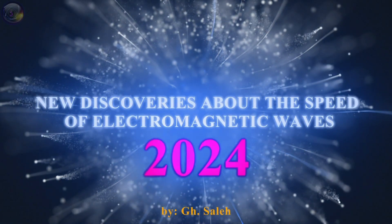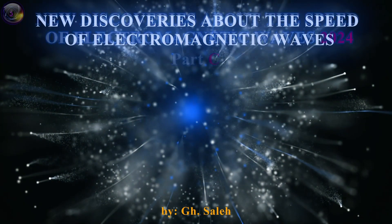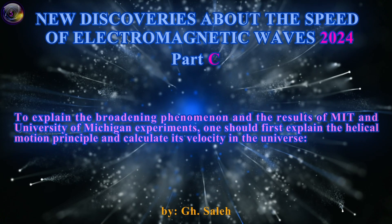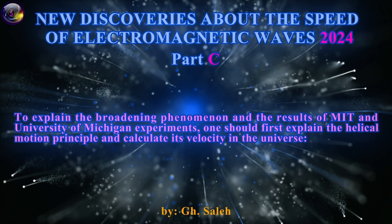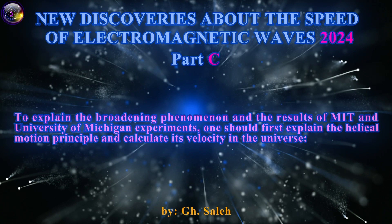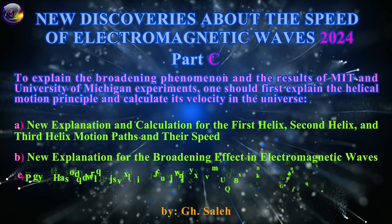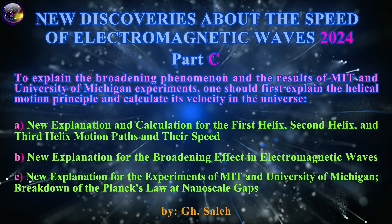New discoveries about the speed of electromagnetic waves, 2024, part C. To explain the broadening phenomenon and the results of MIT and University of Michigan experiments, one should first explain: (a) the helical motion principle and calculate its velocity in the universe — a new explanation for the first, second, and third helix motion paths and their speeds; (b) a new explanation for the broadening effect in electromagnetic waves; (c) a new explanation for the MIT and University of Michigan experiments on the breakdown of Planck's law at nanoscale gaps.